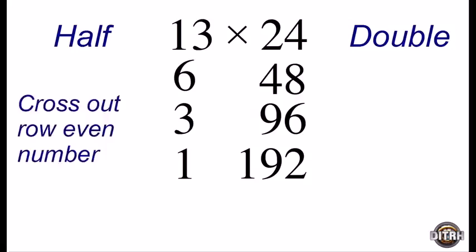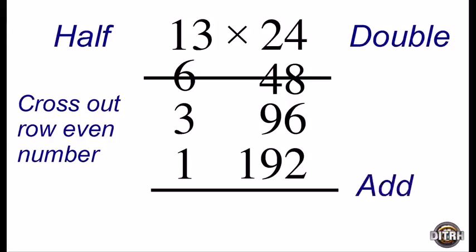The third step is to modify our table by crossing out any row that starts with an even number. In our table, only the row that starts out with six is an even number, so we're going to cross out the entire row. The final step is to add the numbers in the right-hand column. So we need to add up 24, 96, and 192. And when we do that, we get the result of 312, and that's our answer. 13 times 24 is 312.